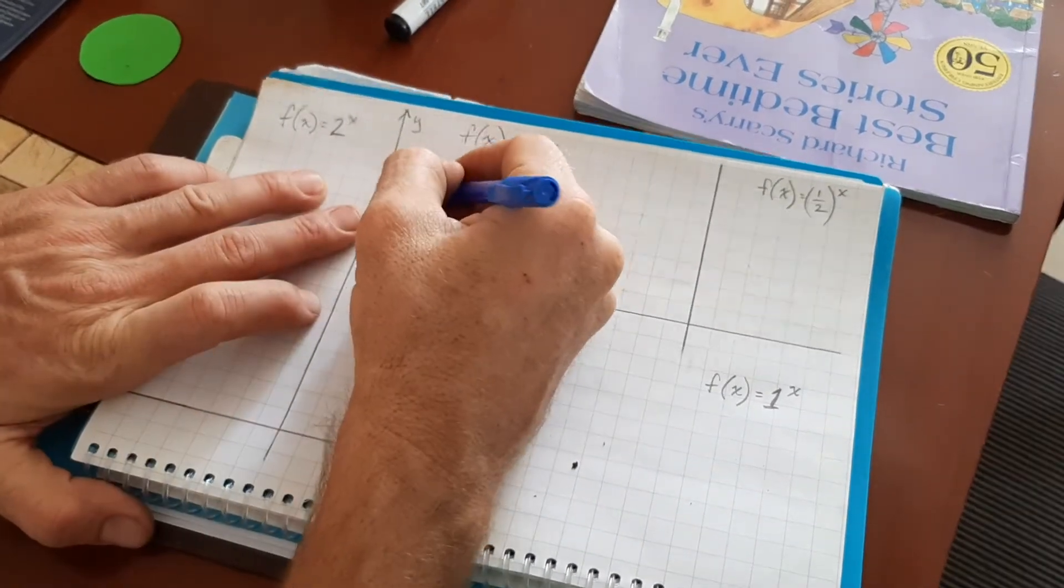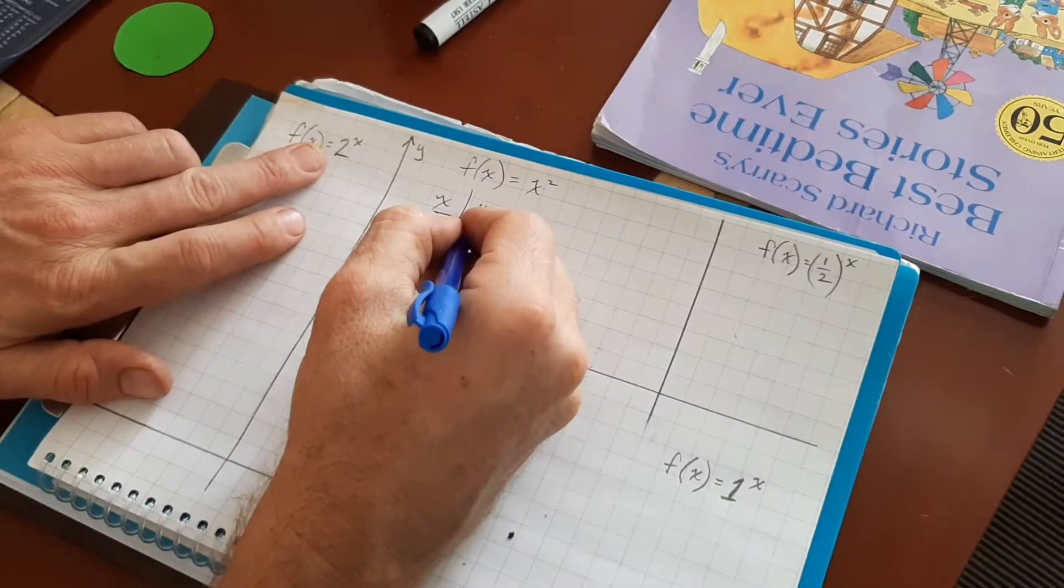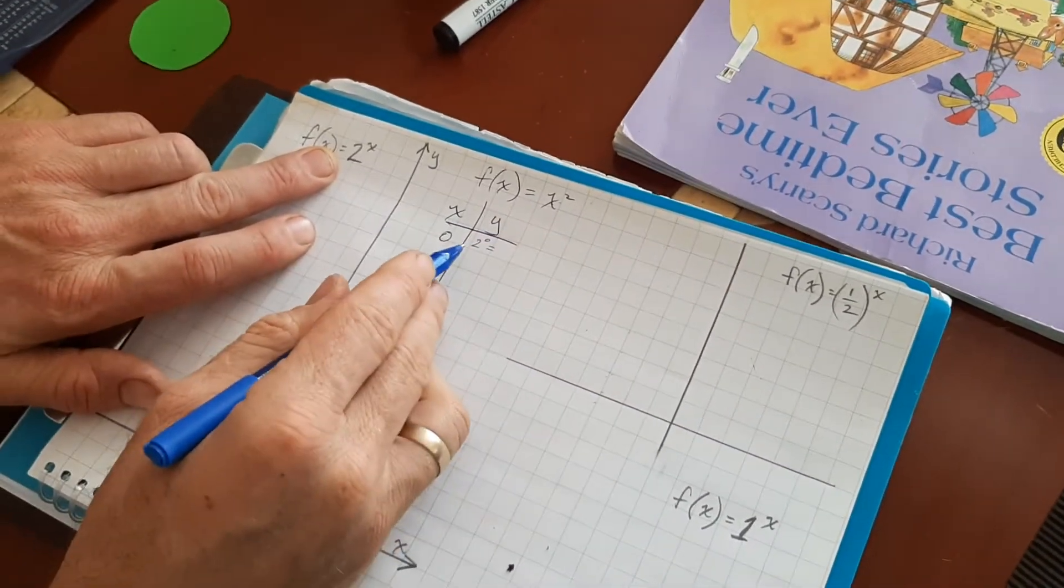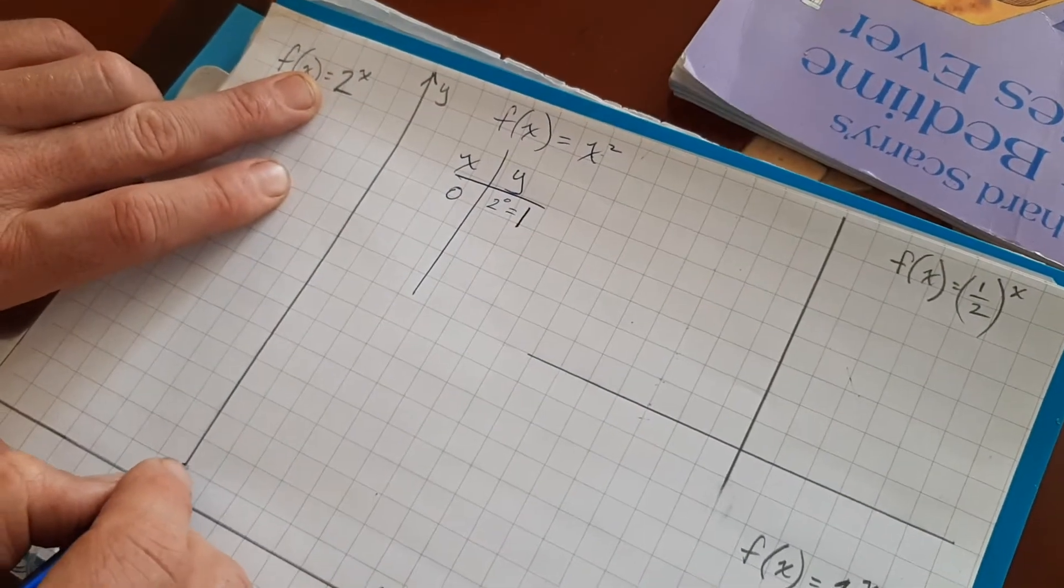Okay, so our favorite number for x first? Zero. Two to the zero power. Two raised to the zero power is, any number raised to the zero power is one. So zero comma one is our first point.